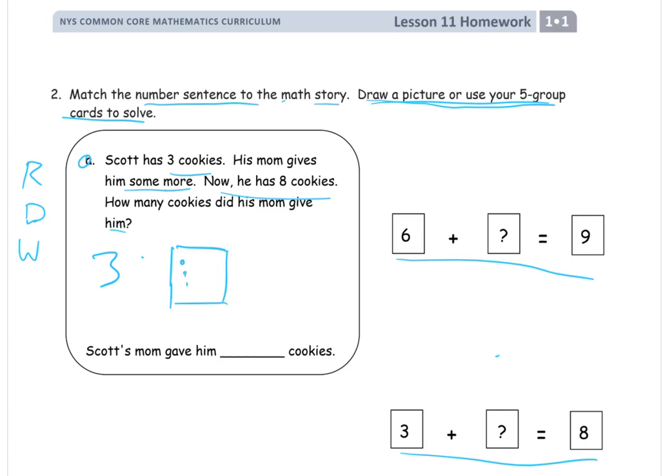So, it's three and we're going to just count up to eight. Three, four, five, six, seven, eight. I needed five more dots. So, his mom gave him five more cookies.